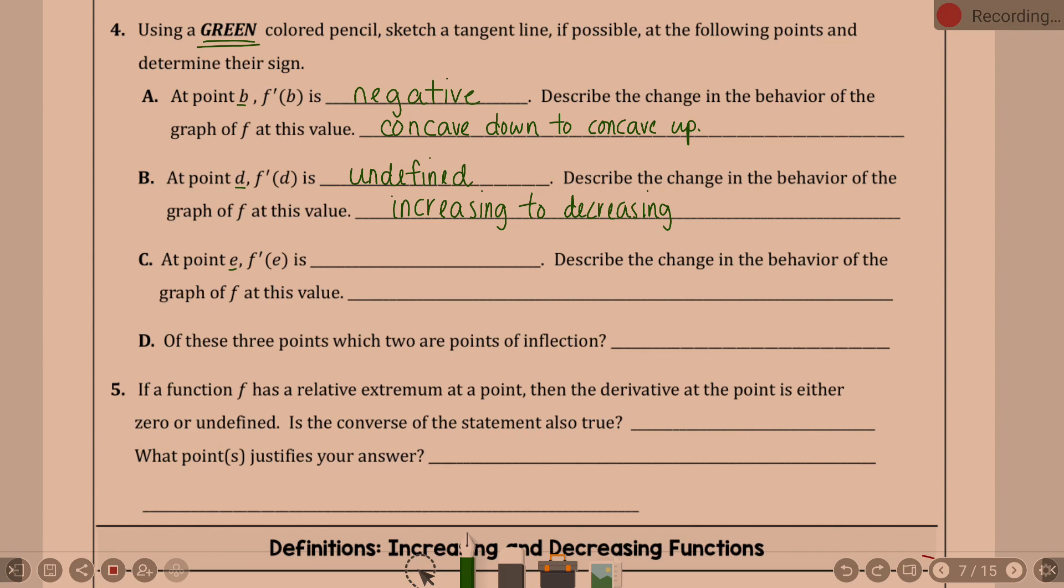At point e, the derivative is zero. That was my horizontal line, so it's zero. Describe the change in behavior of the graph. Think concavity, folks. Concave up to concave down. Speaking of which, of these three points, which two are points of inflection? Where did my concavity change? And that was x equals b and x equals e.